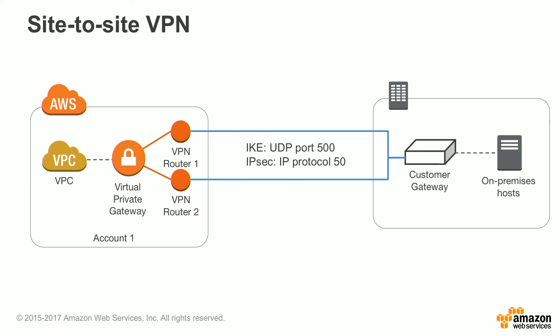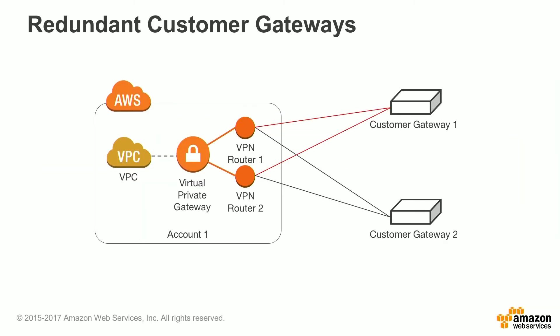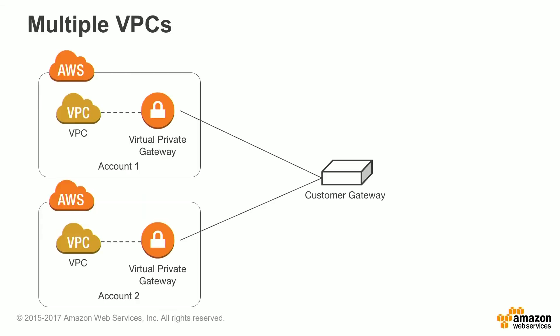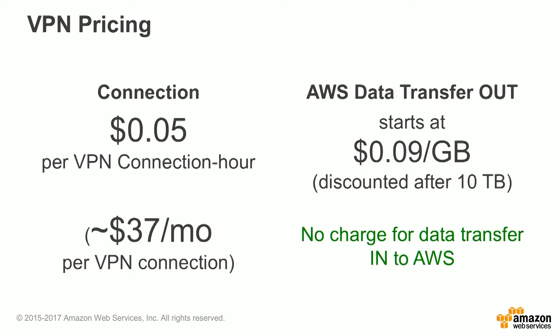In this slide, we show a standard site-to-site VPN coming from campus into your AWS VPC. When you create the VPN connection, we give you two VPN endpoints for failover and redundancy purposes. You can also connect multiple customer gateways to multiple VPN endpoints within AWS. To connect to multiple VPCs, you would do one VPN tunnel per VPC. VPN pricing is determined by two things: the actual VPN connection itself, priced at $0.05 per hour or roughly $37 per month, and data transfer fees. There's never a charge for data transfer into AWS; however, there is a charge for data transfer out, billed at $0.09 per gigabyte, assuming you're using the US East region.